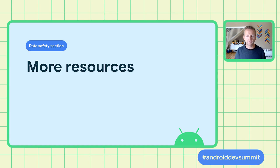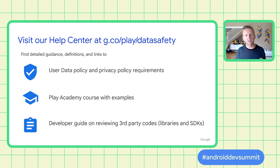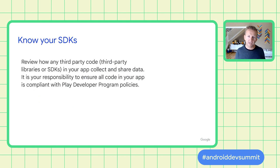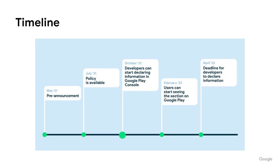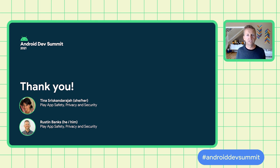Thank you so much for your time today. We'll leave you with just a few quick parting thoughts. First, if you need any more information, please check out our Help Center at the link shown on the screen. Second, this might be a good time to start getting to know your SDKs and how they collect and share data so that you can fill out your data safety section properly. For timeline: developers can start declaring information in the Google Play Console today; users will start to see the labels in February 2022; and developers will have until April 2022 to declare their data information. Thank you so much for taking this journey to improve privacy and security with Android.